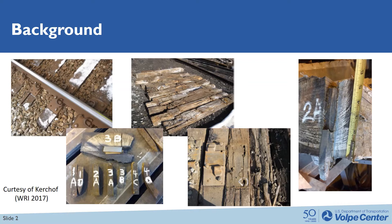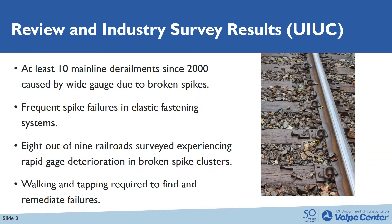In this picture, you can see the timber ties were severely damaged. You can also see the damage location of the broken spikes below the surface of the timber tie. UIUC conducted several industry surveys to understand how big the problem is to the railroad. The results show that at least 10 mainline derailments since 2000 are caused by broken spikes. Frequent spike failures in elastic fastener systems are common. 8 out of 9 railroads have experienced rapid gauge deterioration in broken spike clusters.